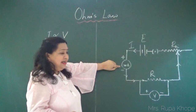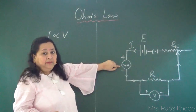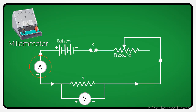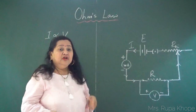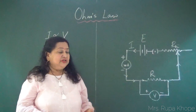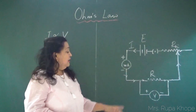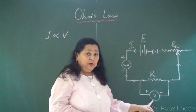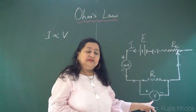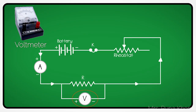Next is the milliammeter — I have used a milliammeter because we are getting the current in milliamps. It is used to measure the current. Then comes the voltmeter, which is used to measure the potential difference across this wire.